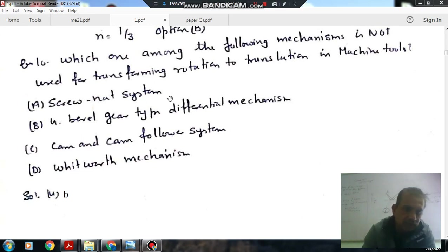So answer is B. All others are used for converting rotary motion into translating motion, only the bevel gear type differential mechanism does not convert rotary motion into translating motion.